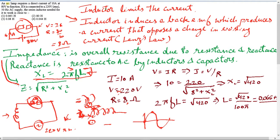And what is impedance formula? This is impedance formula Z, which is the overall resistance due to resistance and reactance is given by this formula, where this is resistance and this is reactance of the inductor. So let's use these two formulae and the given information to solve the question.